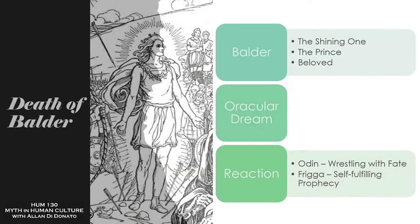She's going to attempt to get everything to swear an oath not to harm her son — asking all things in nature and all things that could potentially harm him to swear not to harm Balder. Everything is happy to do this. And as a side effect, he becomes invulnerable. Not that anything has changed about him, but nothing will harm him anymore. This is the Superman motif — or rather, Superman is kind of based on the Balder motif. The invulnerable hero is a standard motif you find in hero stories, the character who is impervious to damage.